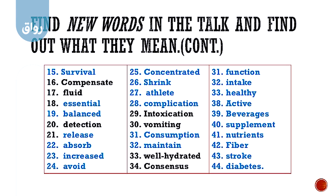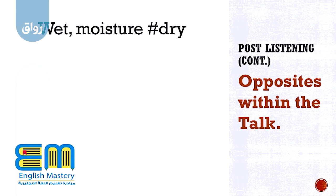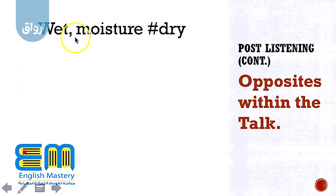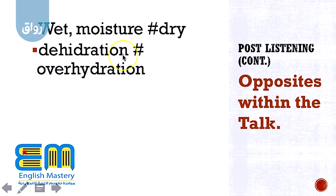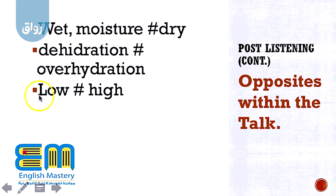So now we're moving to the opposites — the antonyms. The first one is 'wet' — moisture — اللي هو الرطوبة. The opposite is 'dry'. Then 'dehydration' — اللي هو الجفاف — the opposite is 'overhydration' — الترطيب الزائد. Then 'low' — the opposite is 'high'. Then 'increase' — the opposite is 'decrease'.